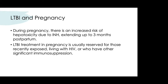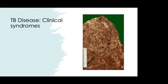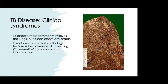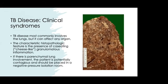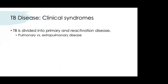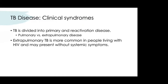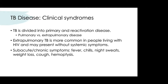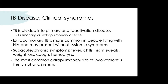TB most commonly involves the lungs but can affect any organ. The characteristic histopathologic feature is caseating or cheese-like granulomatous inflammation. If there is parenchymal lung involvement, the patient is potentially contagious and should be placed in a negative pressure isolation room. Clinical syndromes can be primary or reactivation, and pulmonary versus extrapulmonary. Extrapulmonary TB is more common in people living with HIV and may present without obvious systemic symptoms.